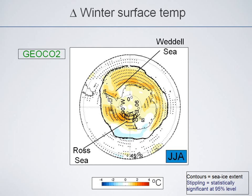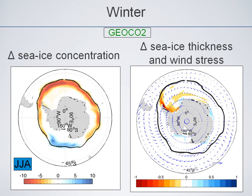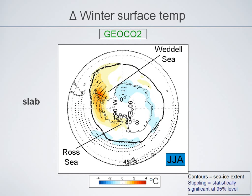Focusing on winter, there is a broad residual warming. I'm pointing out the Weddell and Ross seas because these are seas which have ice sheets that outlet into them. Looking at sea ice concentration change, the solid contour is the control and the dashed is the geo-CO2 run — the extent is not changed at all, but there are changes in concentration along the edges. The ice thickness change along with wind stress in winter shows an anomalous circulation, which may be teleconnected from surface temperature changes in the tropics.